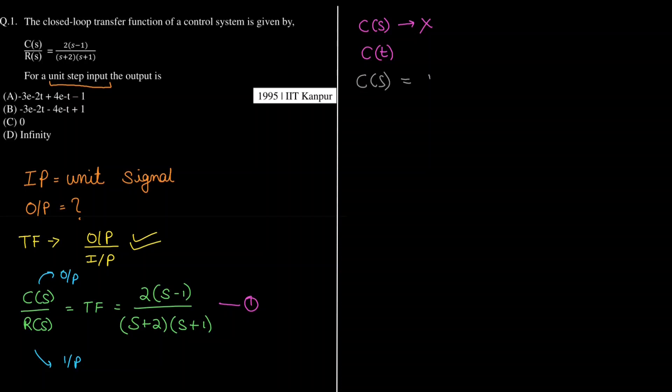Since our input is given as u(t), that means R(t) is a unit step function. In this case, R(s) will be the Laplace transform of u(t). We know that the Laplace transform of a unit step signal is 1 by s.